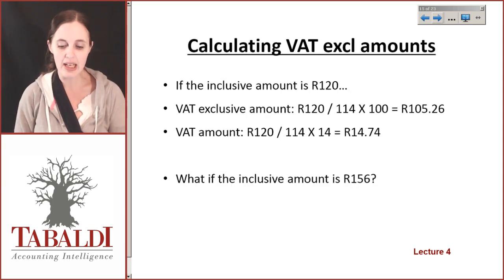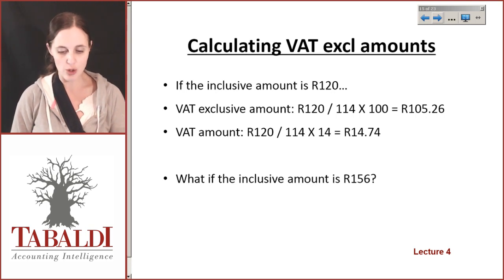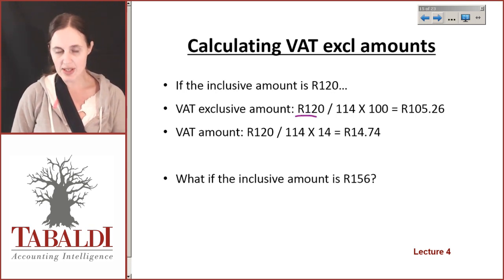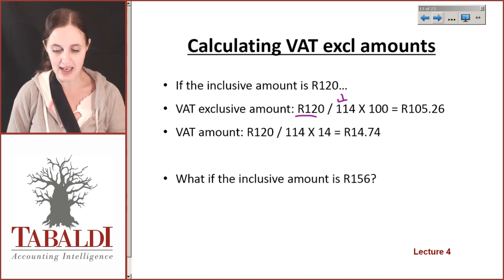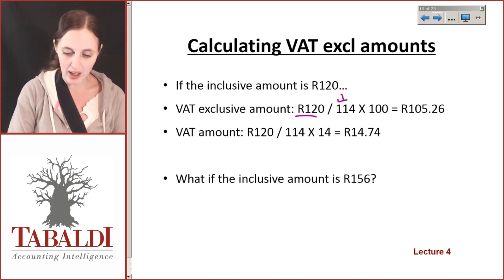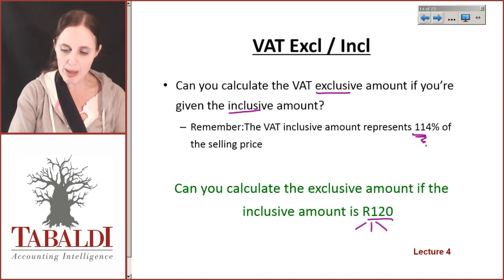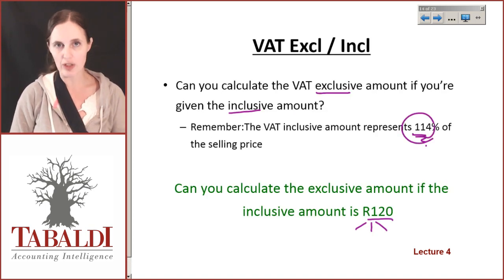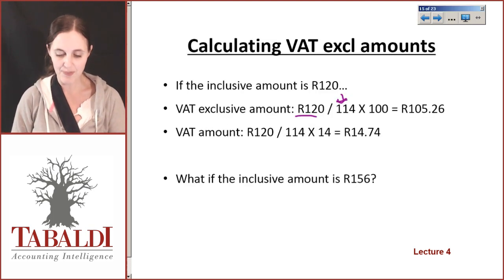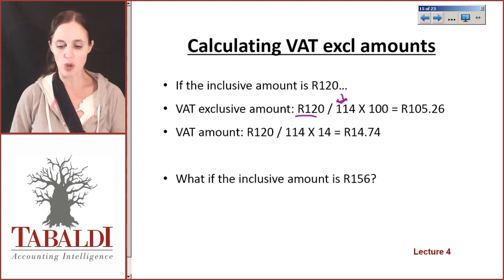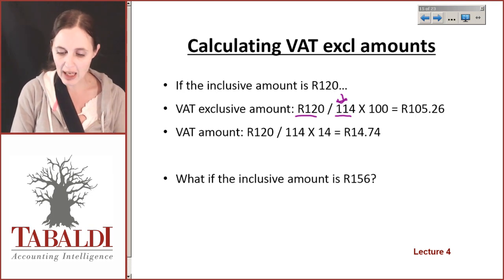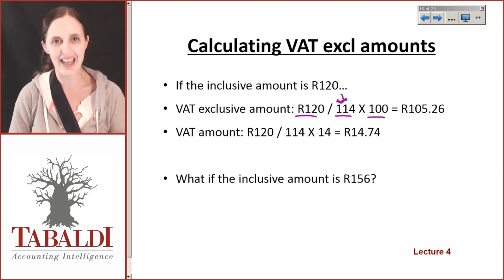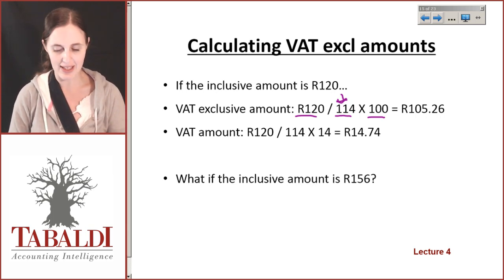If the inclusive amount is 120, how do we calculate our VAT exclusive amount? We divide 120 by 114 — we are breaking this 120 down into 114 parts — because the VAT inclusive amount represents 114% of the sale. So we divide 120 by 114, then multiply by 100 to find out what your 100% is — your original VAT exclusive amount — and you'll find that is 105.26.